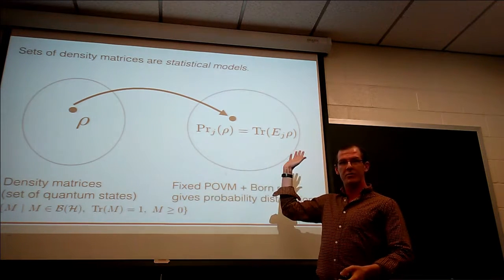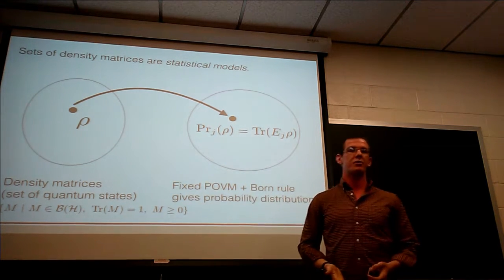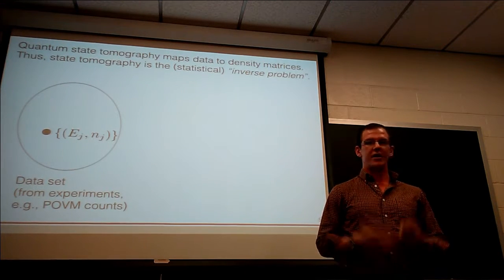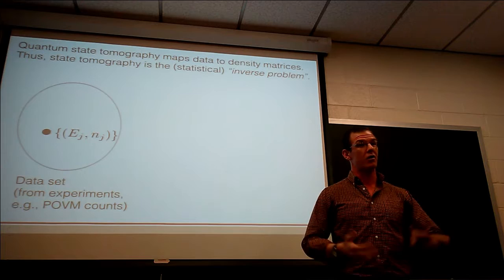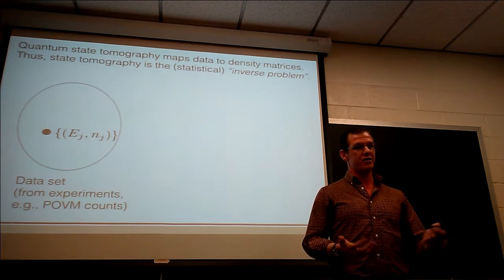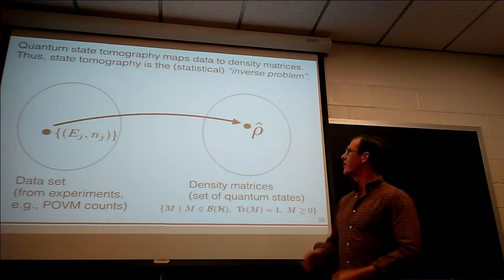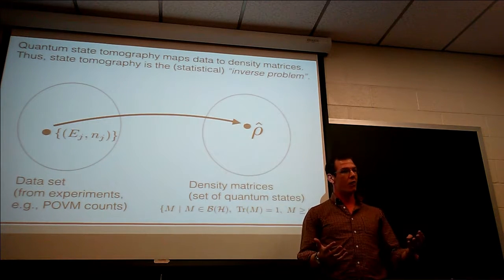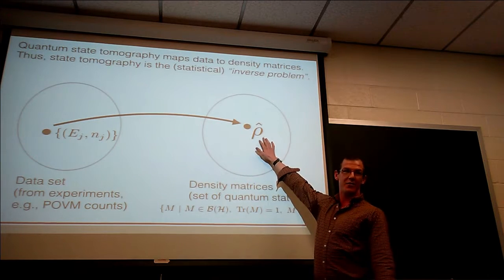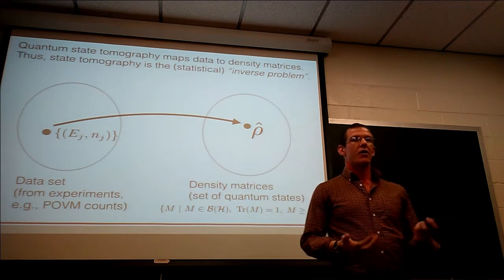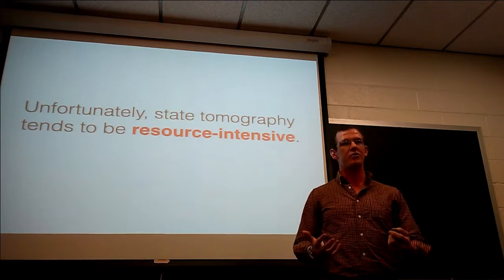This is the forward problem in statistics: if I have a state and I know my POVM, I can predict the probabilities of measurement outcomes. State tomography is what statisticians would call the inverse problem. As a theorist, I'll assume I have access to some data set — a collection of measurement outcomes and the number of times each was observed. What state tomography is supposed to do is take that data set and map it to an estimate of a quantum state, denoted rho-hat.